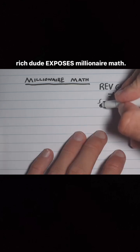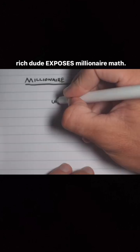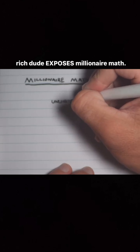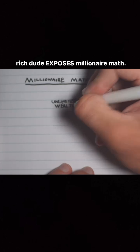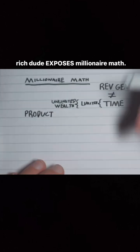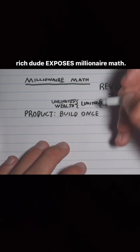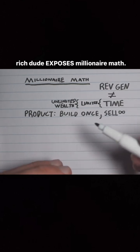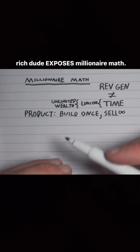The reason we need to do this is because your time is forever limited, and we want to be able to make unlimited wealth. If you don't have that mindset, I don't have the time in this video to convince you. So you're going to need a product. It needs to be something that you can build once and sell unlimited times. You'll have to put time into building it the first time, but you won't have to build it every time somebody buys it.